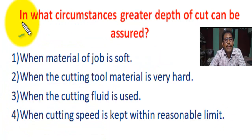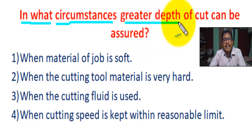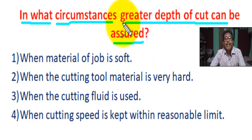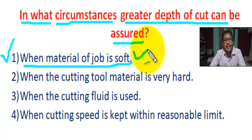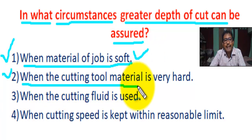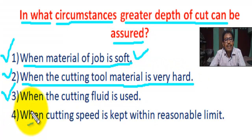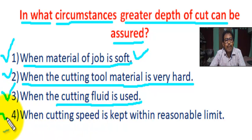Now, in what circumstances can a greater depth of cut be assured? Number one: when the material of the job is soft. Number two: when the cutting tool material is very hard. Number three: when cutting fluid is used. Number four: when cutting speed is kept within a reasonable limit.